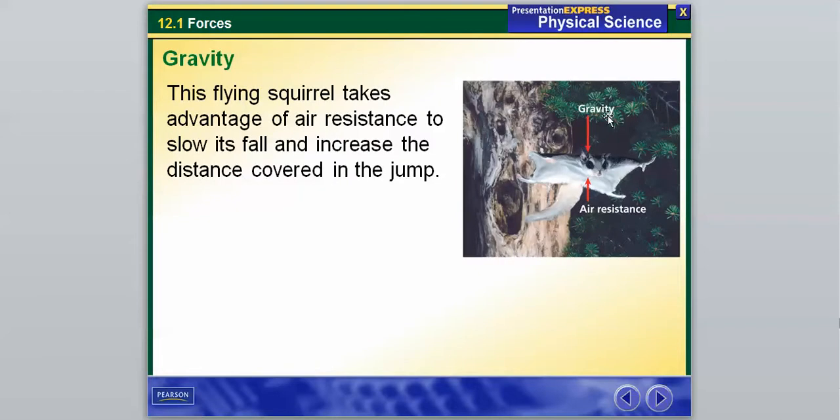As another real-life example, this flying squirrel takes advantage of air resistance to slow its fall and increase the distance covered in a jump. It's using its flaps here to overcome the force of gravity that's pushing it down. Flying squirrels don't really fly necessarily, they glide, and they use the air resistance that's pushing them up to cover more ground. That's an example of overcoming the force of gravity, because if it didn't fold its little arms out there, it'd probably go plummeting down to the ground.